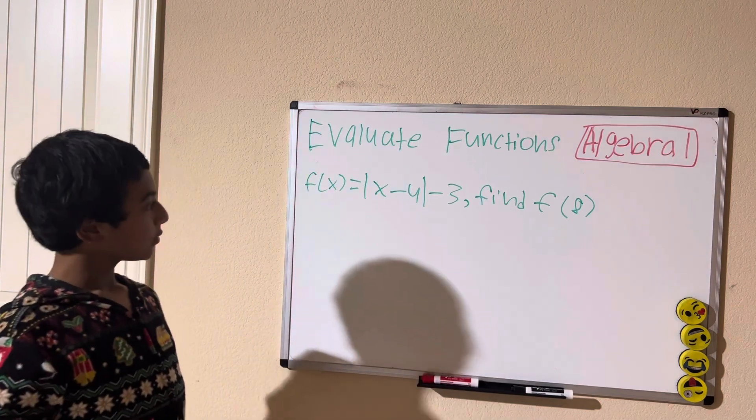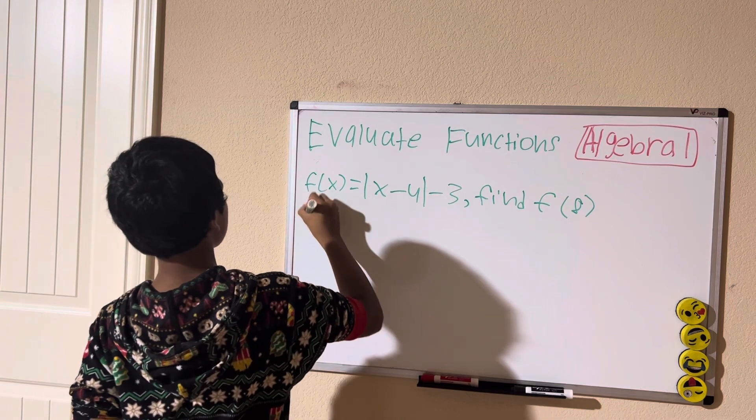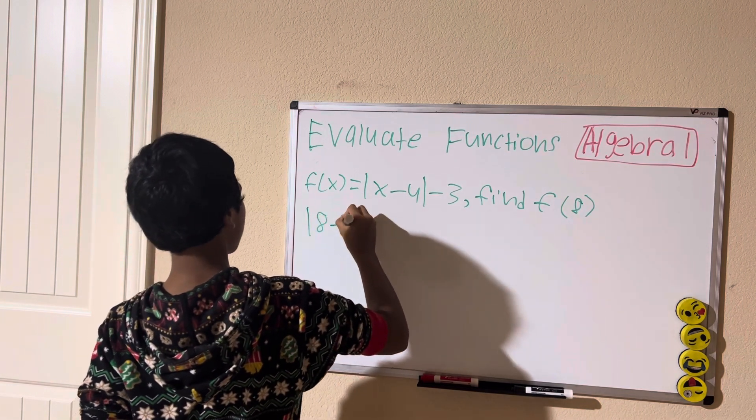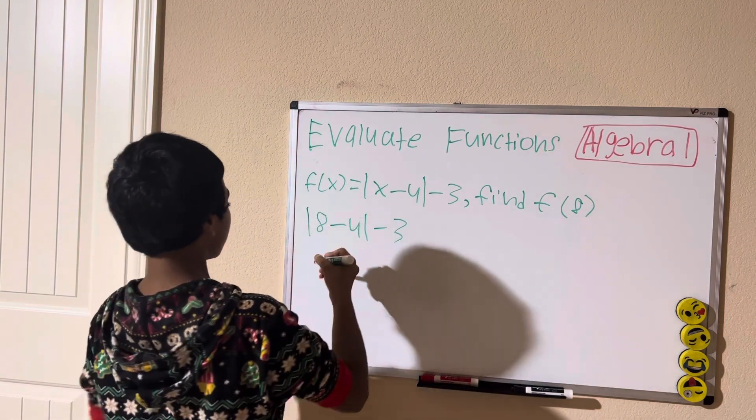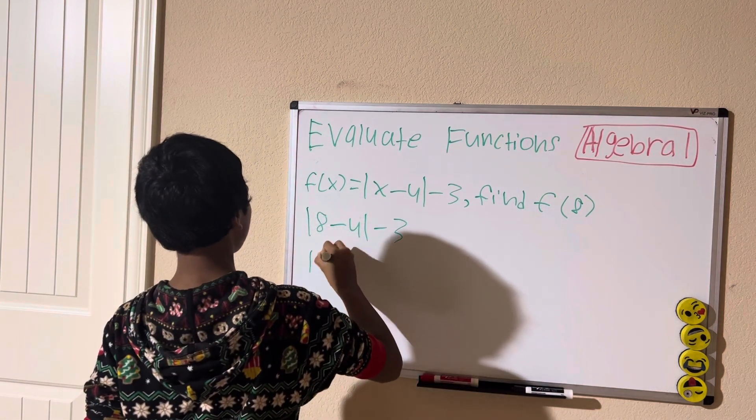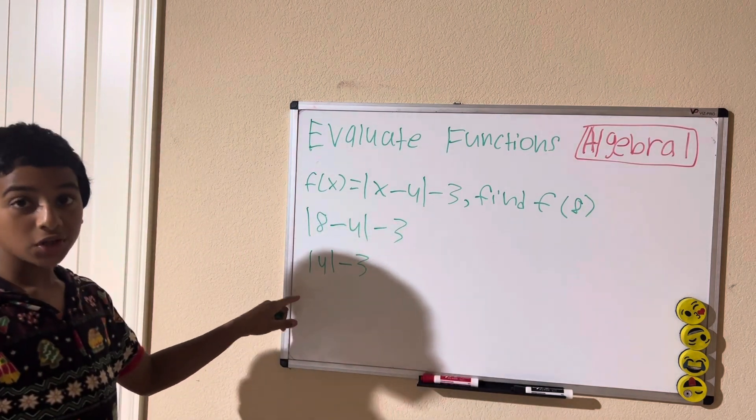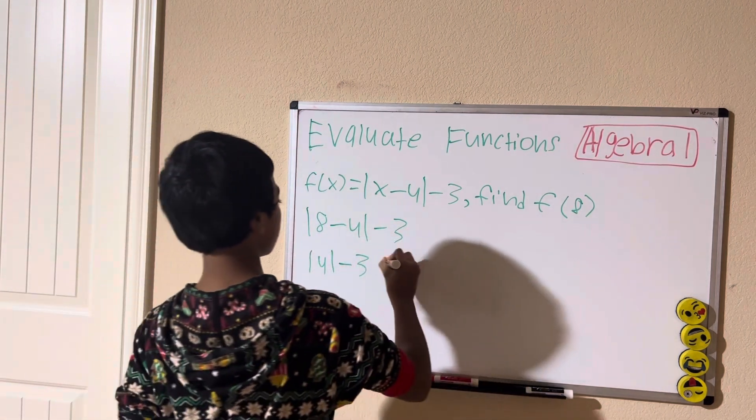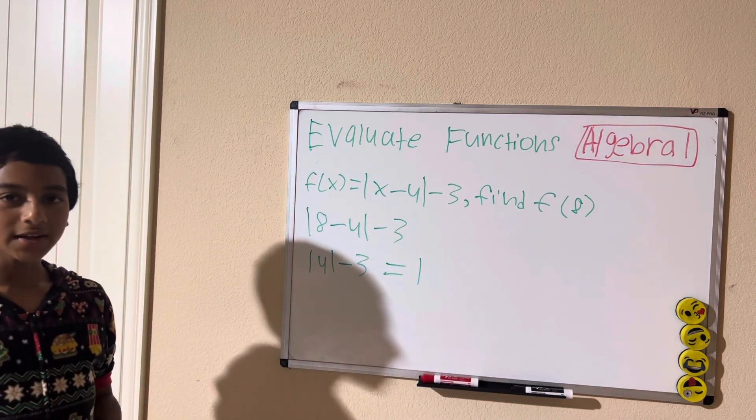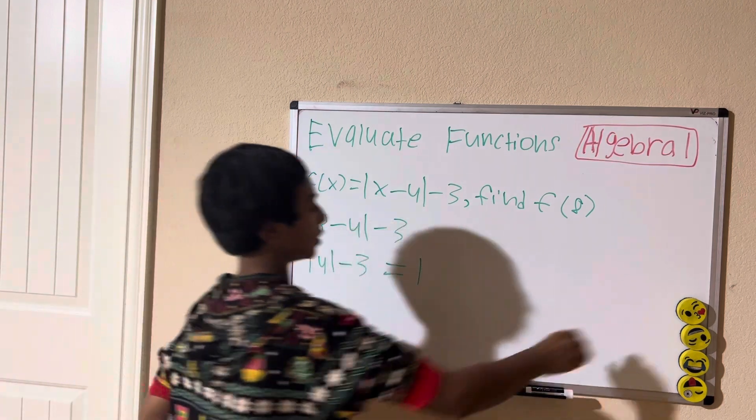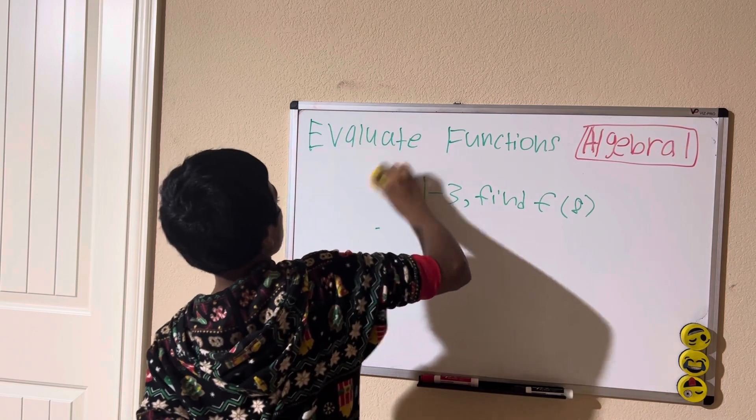Same thing, we're going to plug 8 for x, giving us the absolute value of 8 minus 4 minus 3. 8 minus 4 is 4, and the absolute value of 4 is just 4, which is 4 minus 3, which will give us 1. 1 is our solution for the second problem.